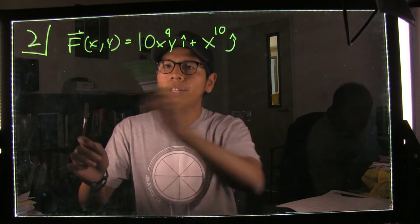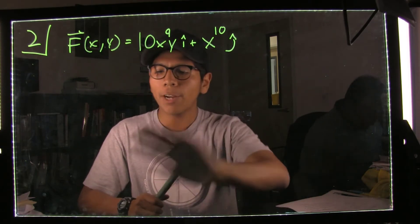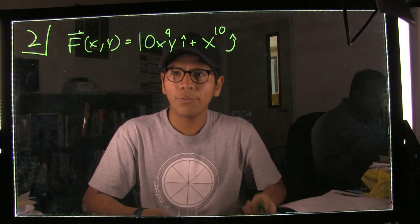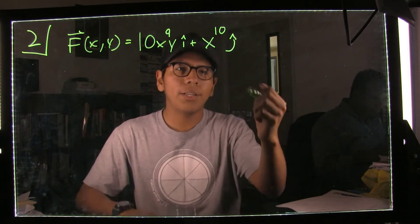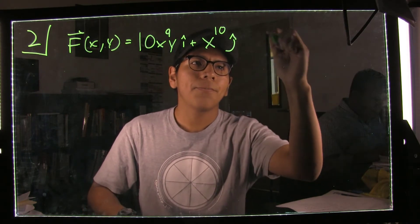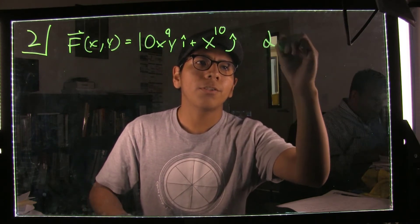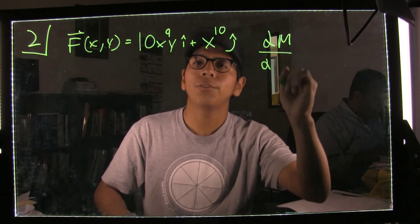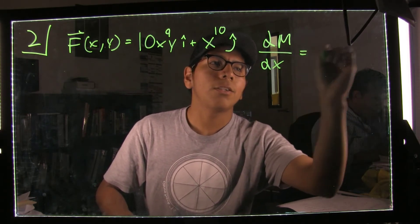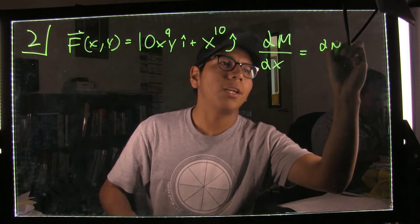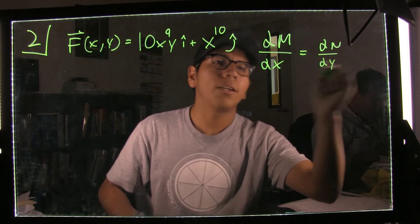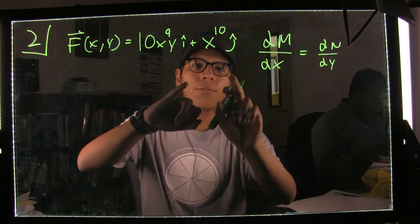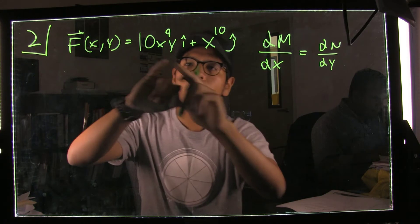Here's the vector field. Right away we can use Theorem 15.1, which helps us determine whether it is conservative or not. That theorem states that if the partial of M with respect to x, and the partial of N with respect to y are the same, then the field is conservative, so we need to find both of these partials.